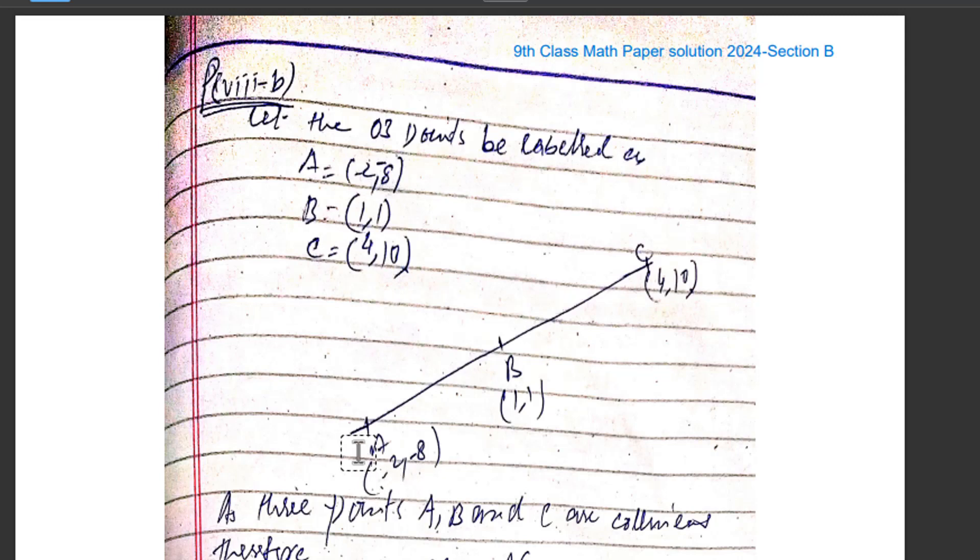So let's suppose this is a line, a hypothetical line. If you plot it properly, you will get it in real form. A equals (-2, -8), B equals (1, 1), C equals (4, 10). These are the three points that we have from our question.